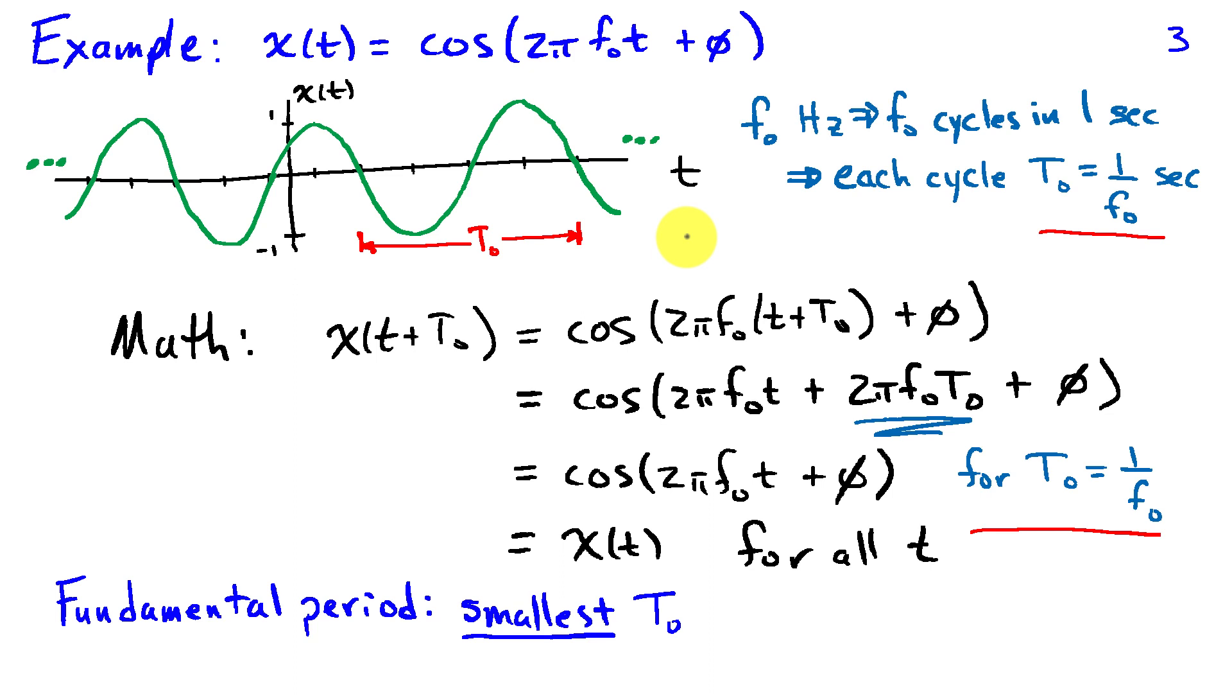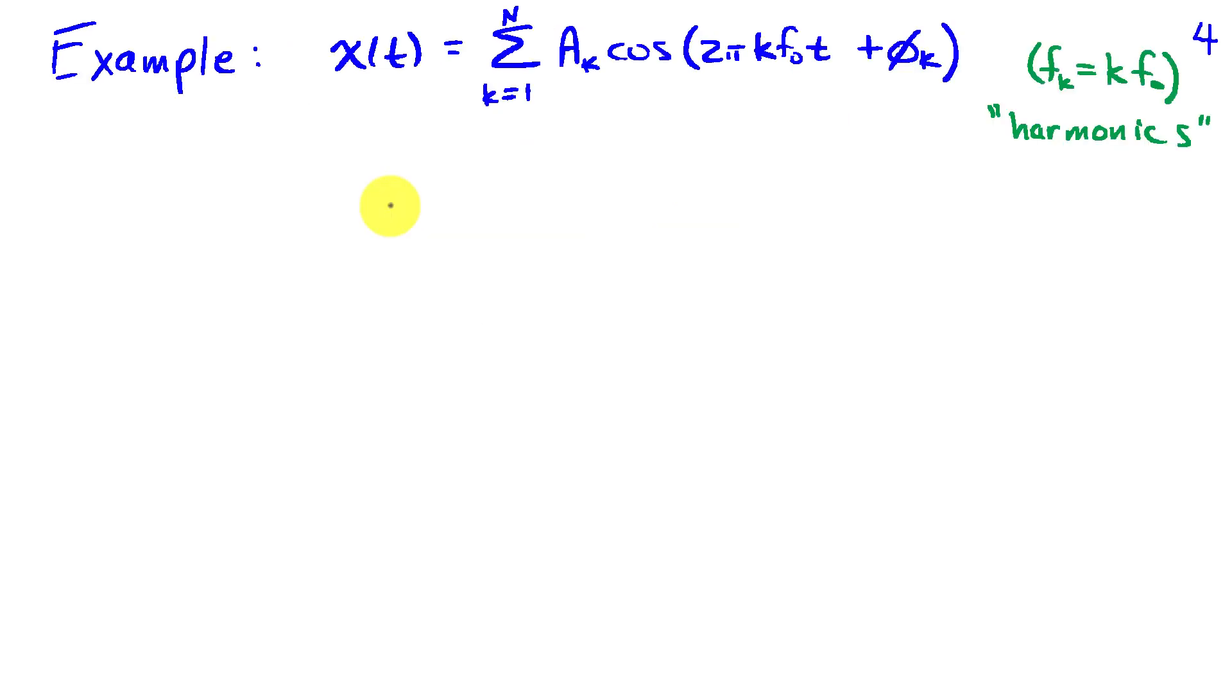So we're going to define the fundamental period to be the smallest t naught for which the signal is periodic. We'll take another example here, a little more complicated, writing x of t as a sum from k equals 1 to n a k cosine 2 pi k f naught t plus phi k.